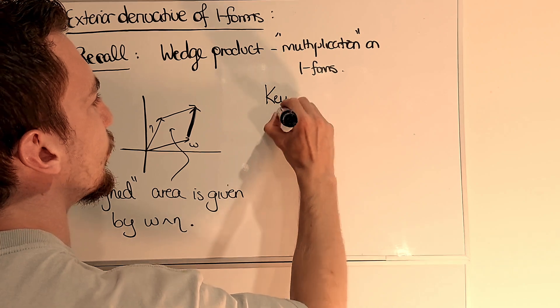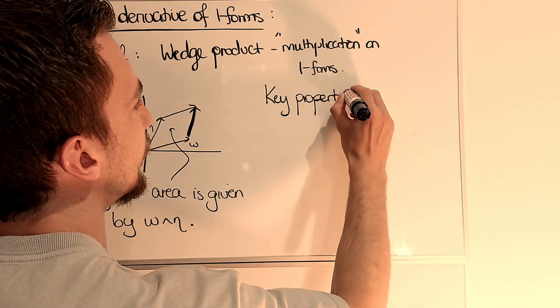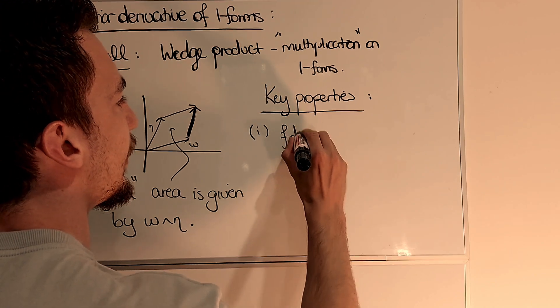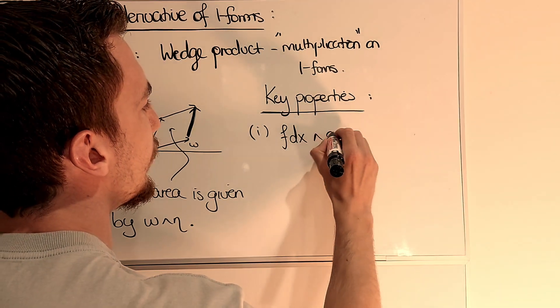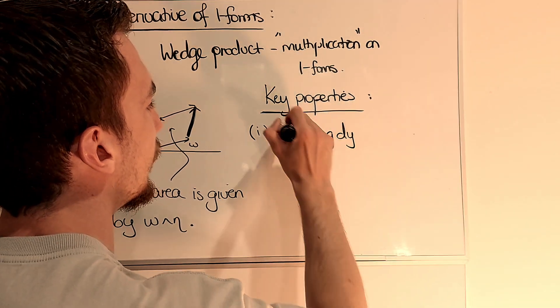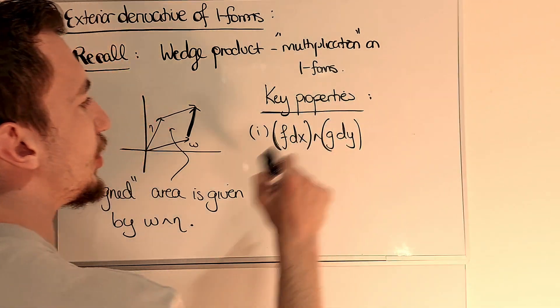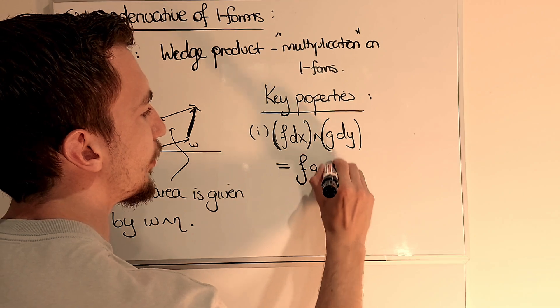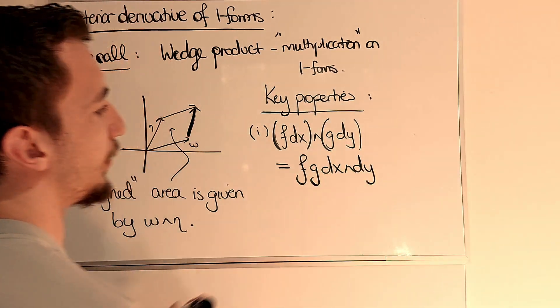So the key properties of the wedge product were that if we had, let's say, f dx wedge g dy, so we have f and g being functions, then we could just bring the functions to the front and we would have something like this.